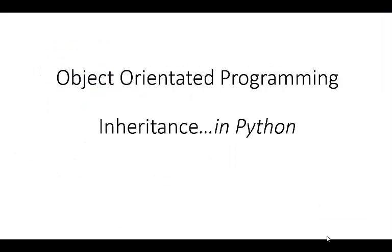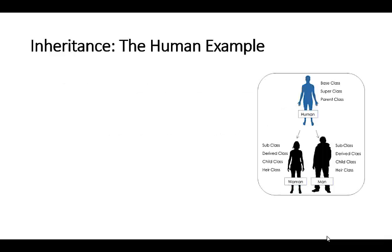This video is all about inheritance in Python. What is inheritance? The nice thing about object-oriented programming is that once we've created a class, if we want to create other classes which have very similar characteristics, we can actually inherit them. Inheritance is taking attributes and methods from a class that already exists and putting them into a new class.